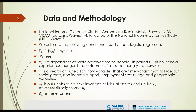Social grants in South Africa are a comprehensive social protection measure, reaching over 18 million grants paid monthly as of March 2021. Our data is the NIDS-CRAM dataset — the National Income Dynamics Study Coronavirus Rapid Mobile Survey — drawn from the NIDS sample, a nationally representative panel study of over 28,000 South Africans followed every two to three years since 2008. We use the first four waves of NIDS-CRAM in our study.